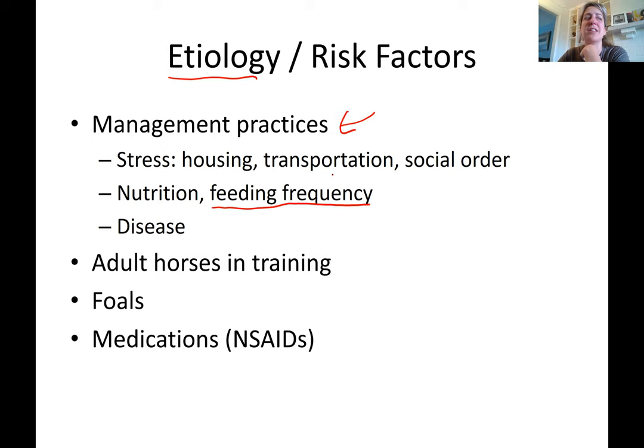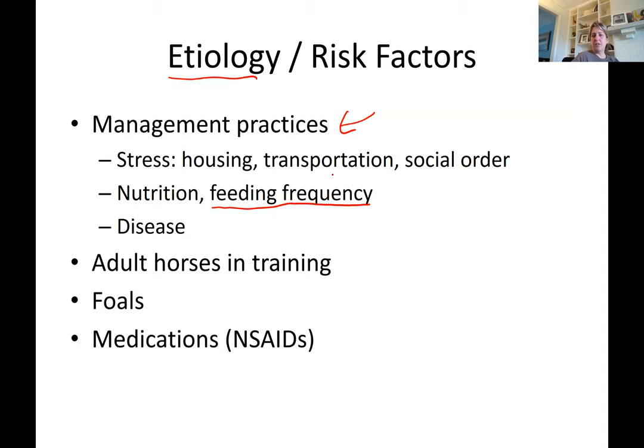When horses are kept in stalls they need a slow-feeding hay net because they can finish two or three flakes of hay within one hour if they're voracious eaters. Slow-feeding hay nets extend that to about two hours, which isn't dramatically slower, but it does prolong mastication and keeps food in their stomachs for longer.